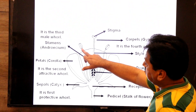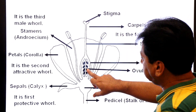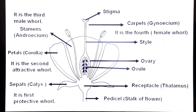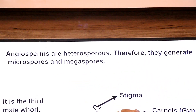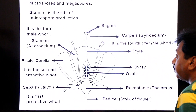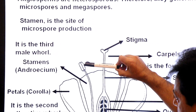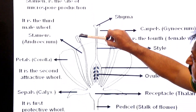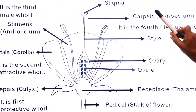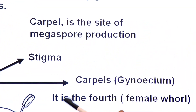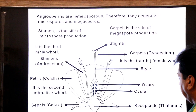Stamens produce microspores and carpels are the site of megaspores. Angiosperms are heterosporous plants; therefore they generate microspores and megaspores. Stamen is the site of microspore production - this process is called microsporogenesis. Ovules are the site of megaspore production - this is called megasporogenesis. That is why these plants are called heterosporous plants.